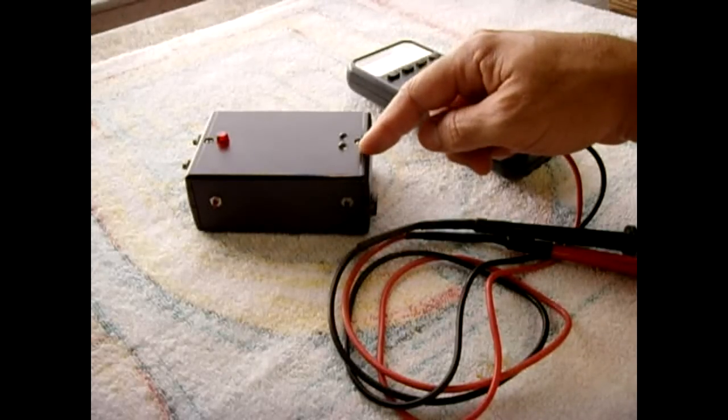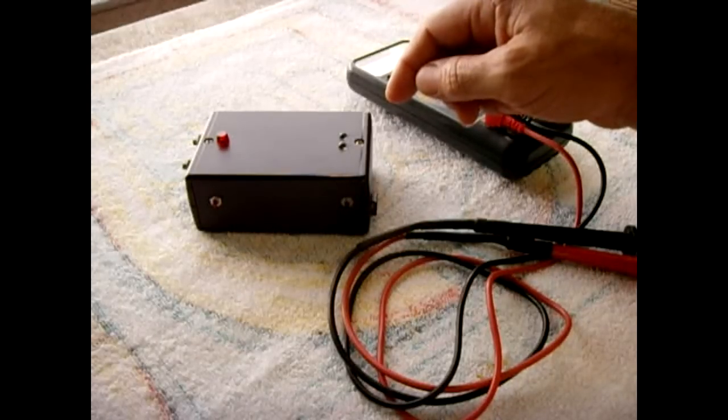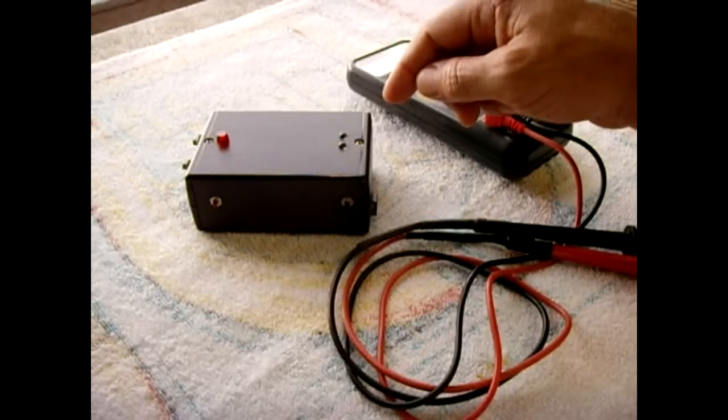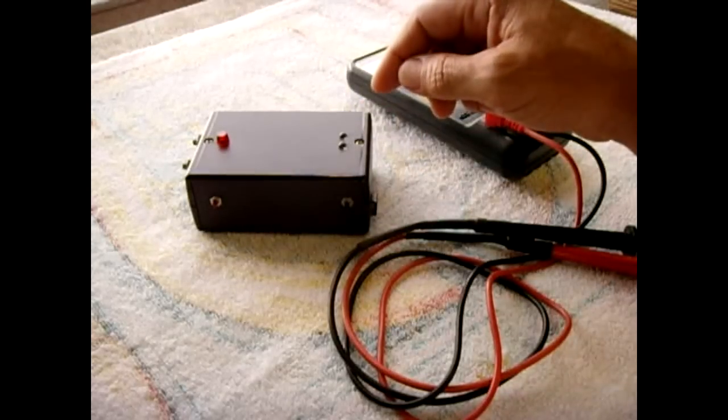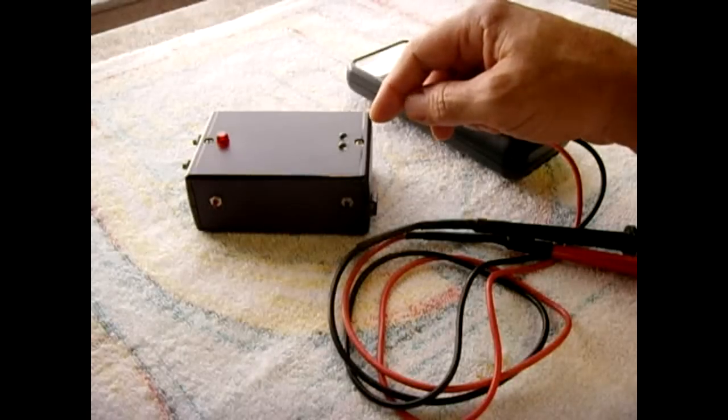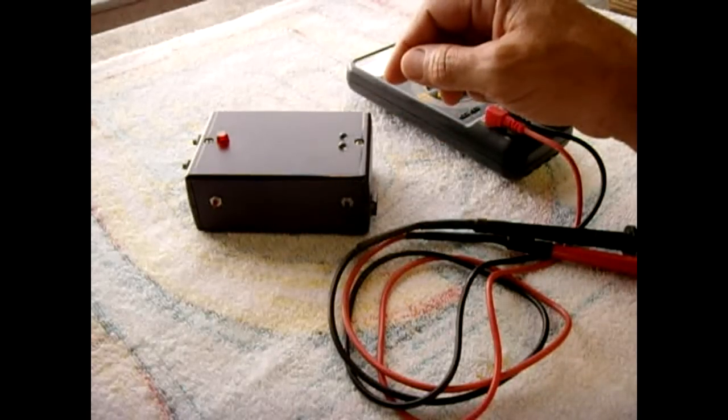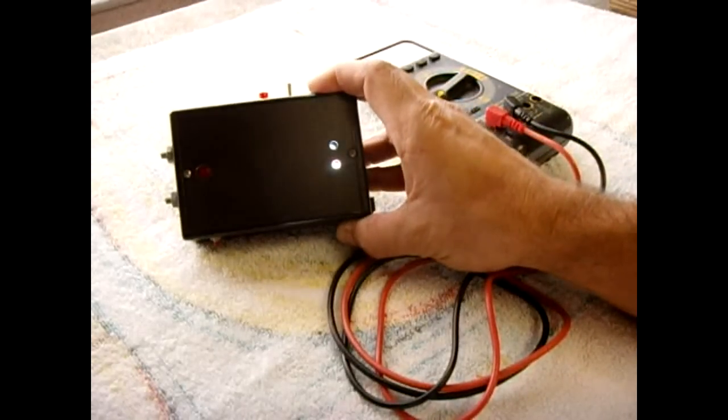Inside here is a simple LM 317 T circuit that has a maximum voltage output of four point one eight volts. I also limited the current which would be charging the 18650 battery by using a low value resistor on the output of the LM 317 T circuit.